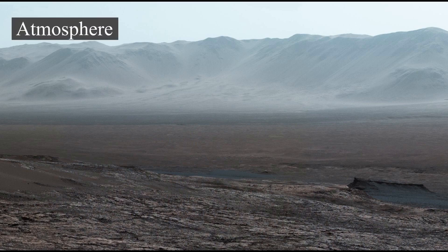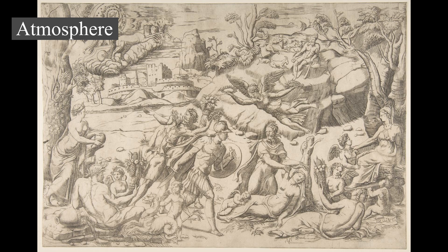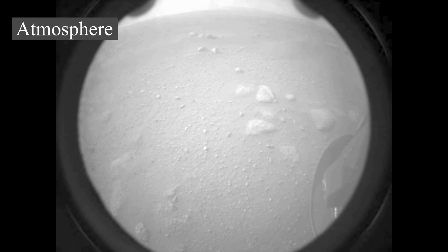Mars lost its magnetosphere four billion years ago, possibly because of numerous asteroid strikes, so the solar wind interacts directly with the Martian ionosphere, lowering the atmospheric density by stripping away atoms from the outer layer. Both Mars Global Surveyor and Mars Express have detected ionized atmospheric particles trailing off into space behind Mars. Compared to Earth, the atmosphere of Mars is quite rarefied: atmospheric pressure on the surface ranges from a low of 30 Pa on Olympus Mons to over 1,155 Pa in Hellas Planitia, with a mean surface pressure of 600 Pa.